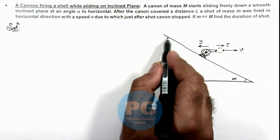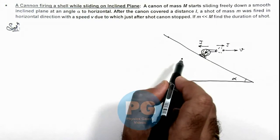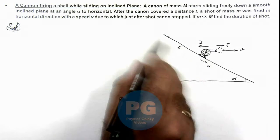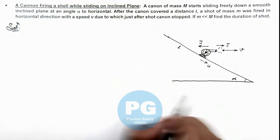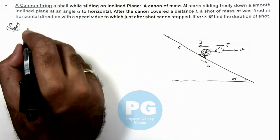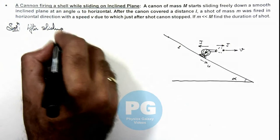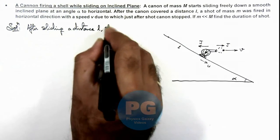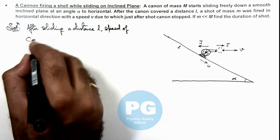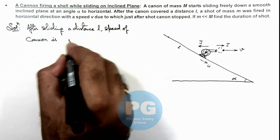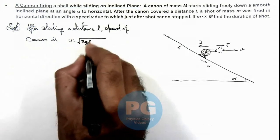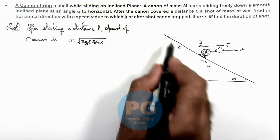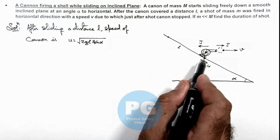After sliding a distance l, the cannon will have a speed u in the direction of the incline. The speed u after sliding distance l can be written as root of 2 g l sine alpha, because it is sliding with an acceleration g sine alpha and slides down by a distance l. Then the shot is fired.